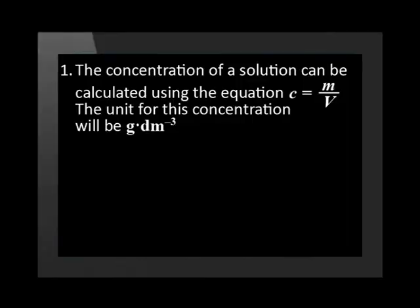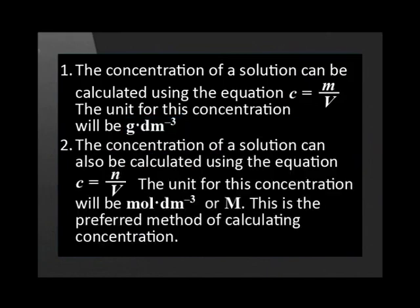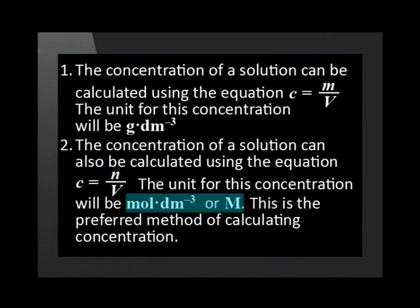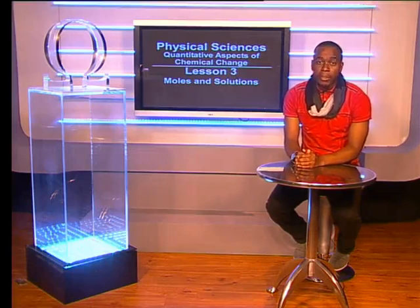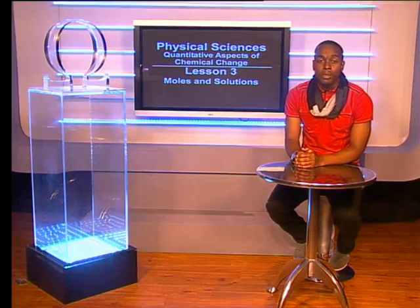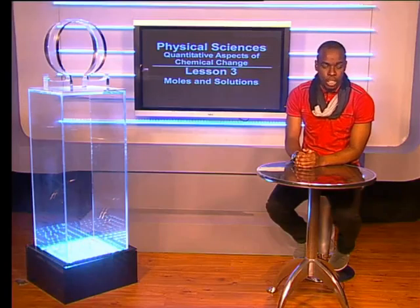Let us recap what we have learned in today's lesson. The concentration of a solution can be calculated using C equals m over V — the unit is grams per decimeter cubed. Concentration can also be calculated using C equals n over V — the unit is moles per decimeter cubed, or capital M. This is the preferred method of calculating concentration. Make sure to attempt the task video at the end of this series, and find more information at www.mindsearch.co.za/learn. Join me in the next lesson when we study moles and chemical reactions.